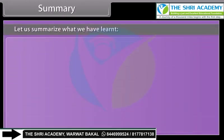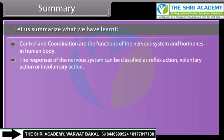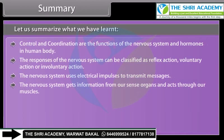Control and coordination are the functions of the nervous system and hormones in the human body. The responses of the nervous system can be classified as reflex action, voluntary action, or involuntary action. The nervous system uses electrical impulses to transmit messages and gets information from our sense organs, acting through our muscles.